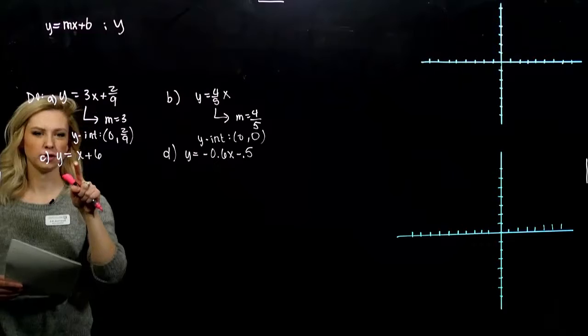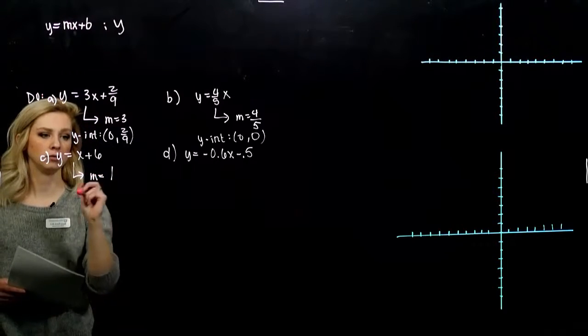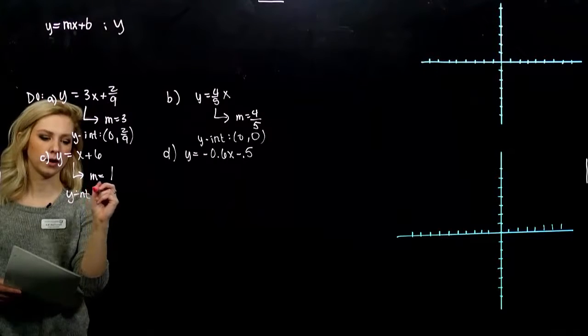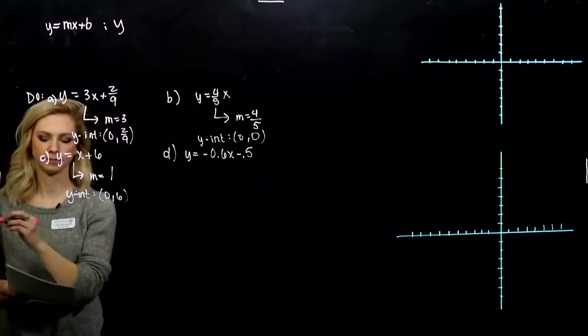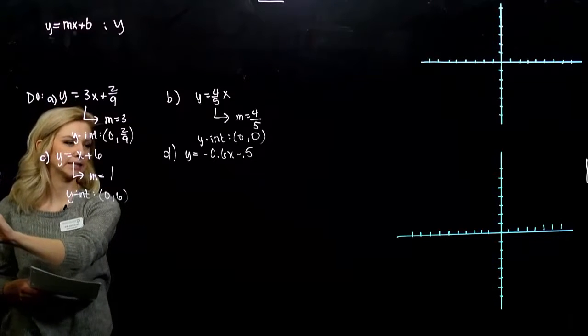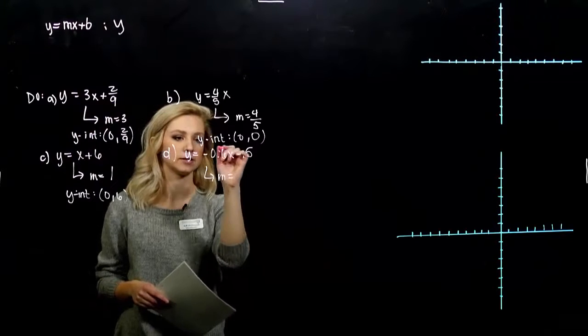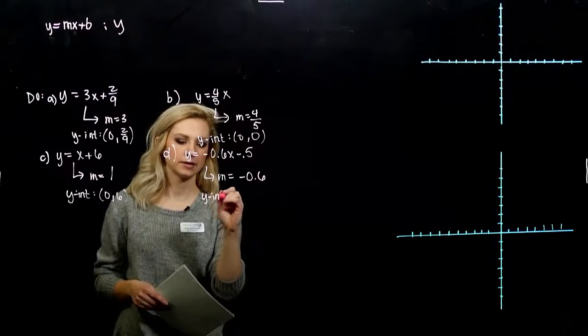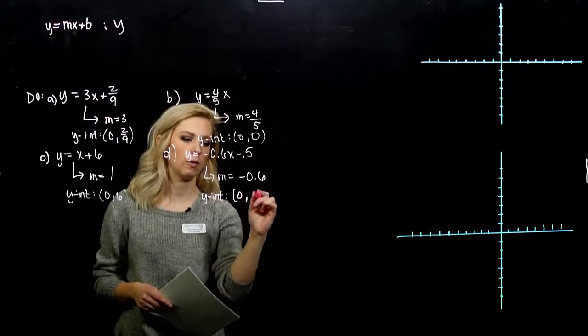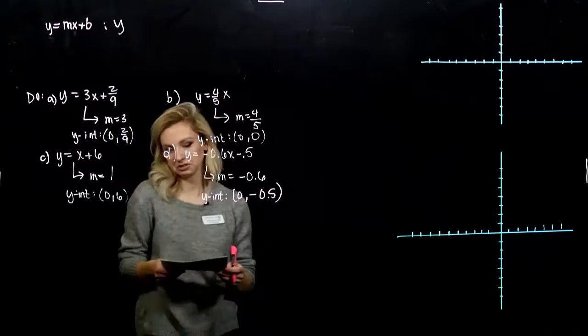Next, what is the coefficient on x in this case? Unspoken 1. Y-intercept happens where? At the point 0, 6. And last, we've got a negative decimal, but still, slope is just a constant on the front of x. And the y-intercept happens where? 0 minus 0.5. It's a little bit of extra practice.